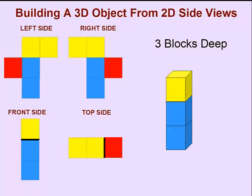We can deduce from those three sides that it must be a yellow block in front of our first yellow block, and there must be a red block behind the middle blue block.